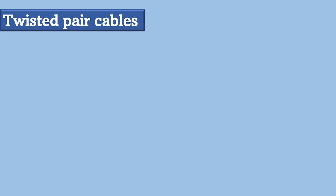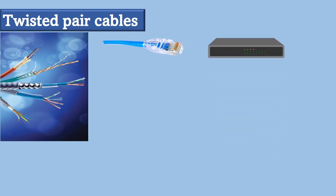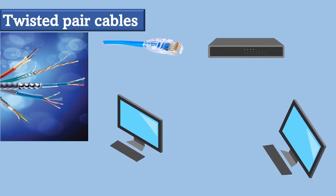Hello everyone. In this video I'm going to talk about one of the commonly used network cables, which are twisted pair cables. Computer network cables come in three forms: twisted pair cables, coaxial cables, and fiber optic cables. We will be talking about coaxial cables and fiber optic cables in the next videos. Twisted pair cables are used in telephone communication and ethernet networks.